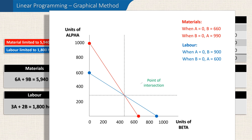We now have an intersection between the two lines, and this is what we've been working towards. Importantly, this point shows us what combination of products alpha and beta maximises contribution and makes the most profit from our limited resources. Using the graph, we can estimate that we should make roughly 290 alphas and around 460 betas to maximise contribution.